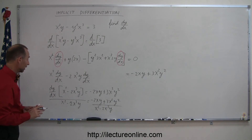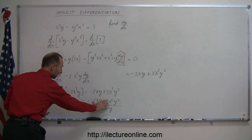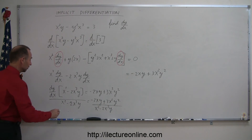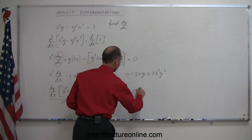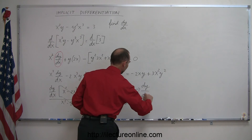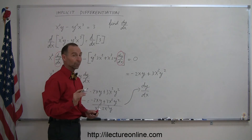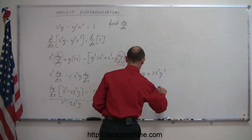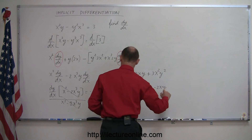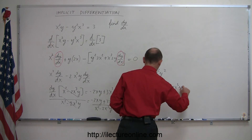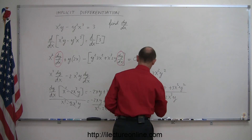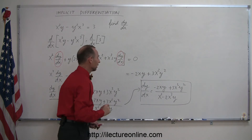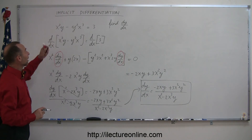So you can see that dividing the left side by this causes it to cancel out, and now I have isolated dy/dx. So finally I can write that dy/dx, which means the derivative of y with respect to x, is equal to minus 2xy plus 3x squared y squared, divided by x squared minus 2x cubed y. And that is the derivative of y with respect to x of my original function.